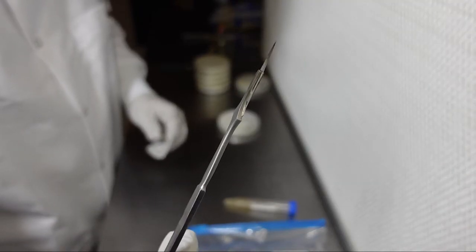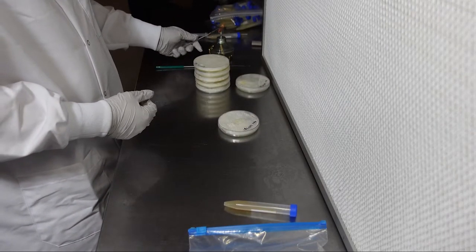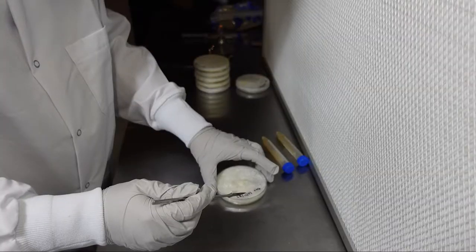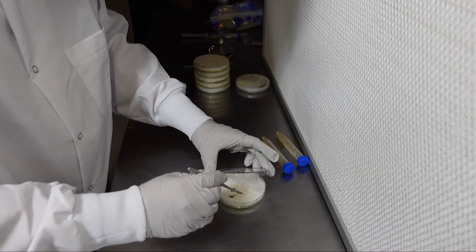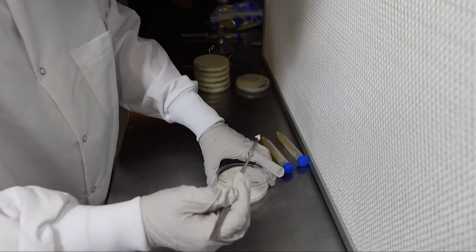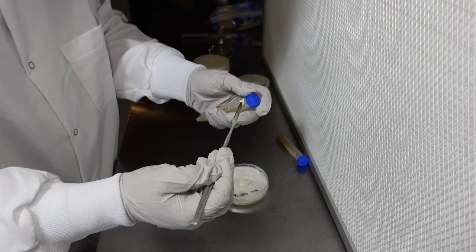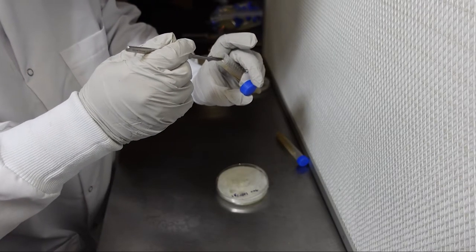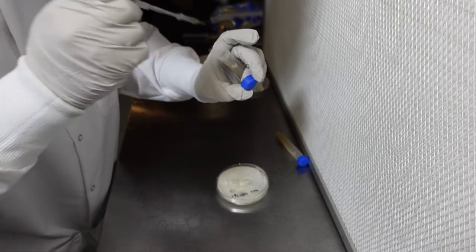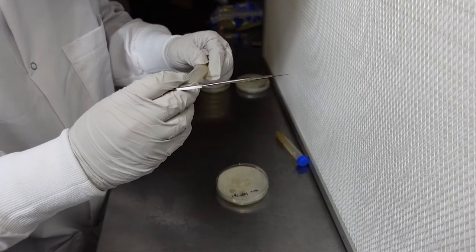Once your space is clean, start by flame sterilizing your scalpel until it's red hot. Let the scalpel cool for a few seconds and then cut a small wedge of agar and transfer it to the agar tube. Once you screw the lid back on and label your slant, it's ready for long term storage.